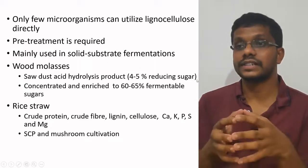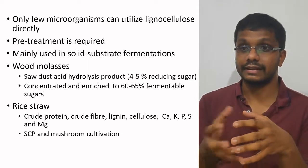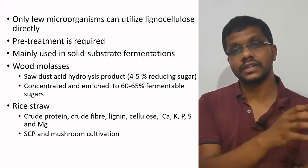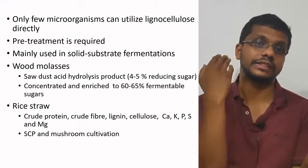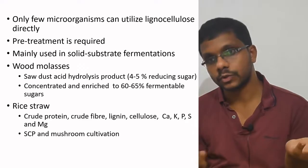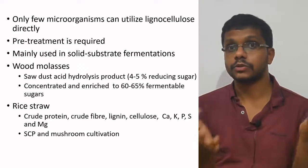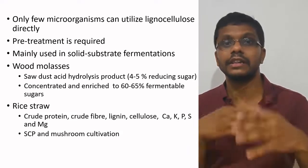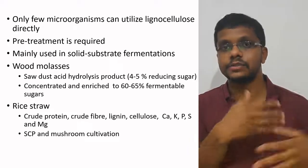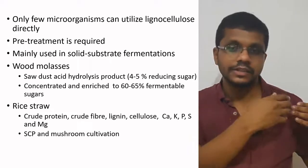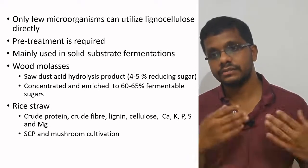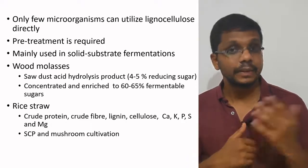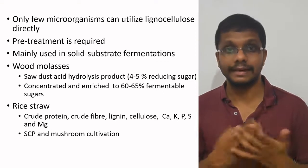Only very few microorganisms can utilize lignocellulose directly. What we do is take the lignocellulose and apply some treatment to convert the cellulose into glucose — this is called pre-treatment. Before using cellulose as a carbon source, we convert it using chemicals or enzymes to produce glucose, and that glucose is then used as the carbon source.